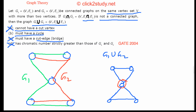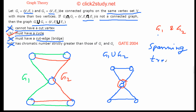We are left with option B, which must be correct, and we can also prove it. G1 ∪ G2 must have a cycle. If either G1 or G2 already has a cycle, the union will obviously contain a cycle. If neither has a cycle but both include all vertices, then both G1 and G2 must be spanning trees of G1 ∪ G2.